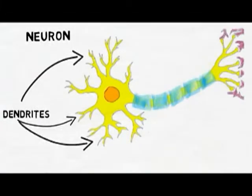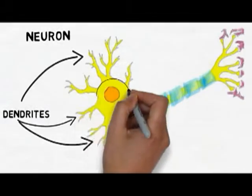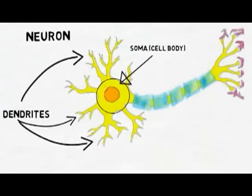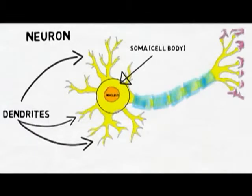Those signals picked up by dendrites cause electrical changes in a neuron that are interpreted in an area called the soma, or the cell body. The soma contains the nucleus, which contains the DNA, or genetic material of the cell. The soma takes all the information from the dendrites and puts it together in an area called the axon hillock.